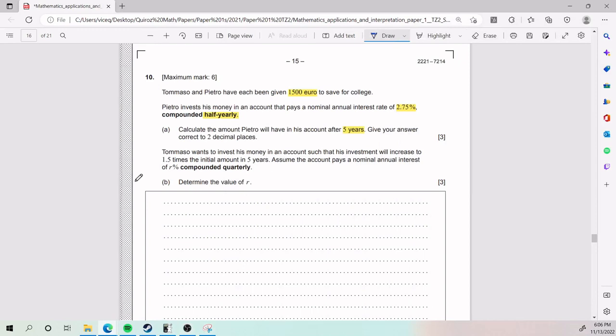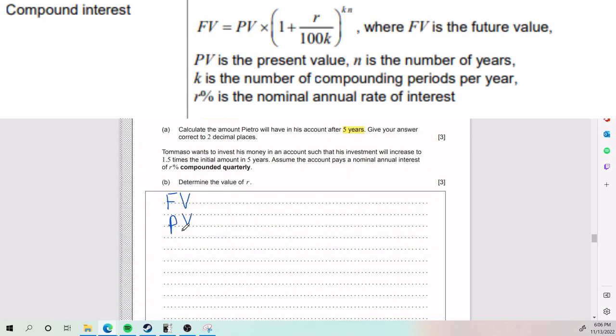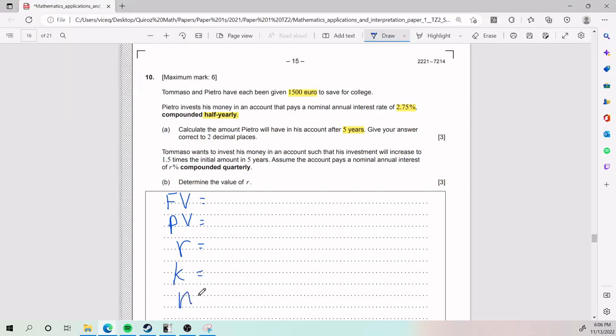This formula is asking for five different things: FV, future value; PV, present value; R, which is your actual interest rate, like the percent; K, which is the amount of periods per year; and N, which is the amount of years. You will always have four out of five. That means you can solve the equation.